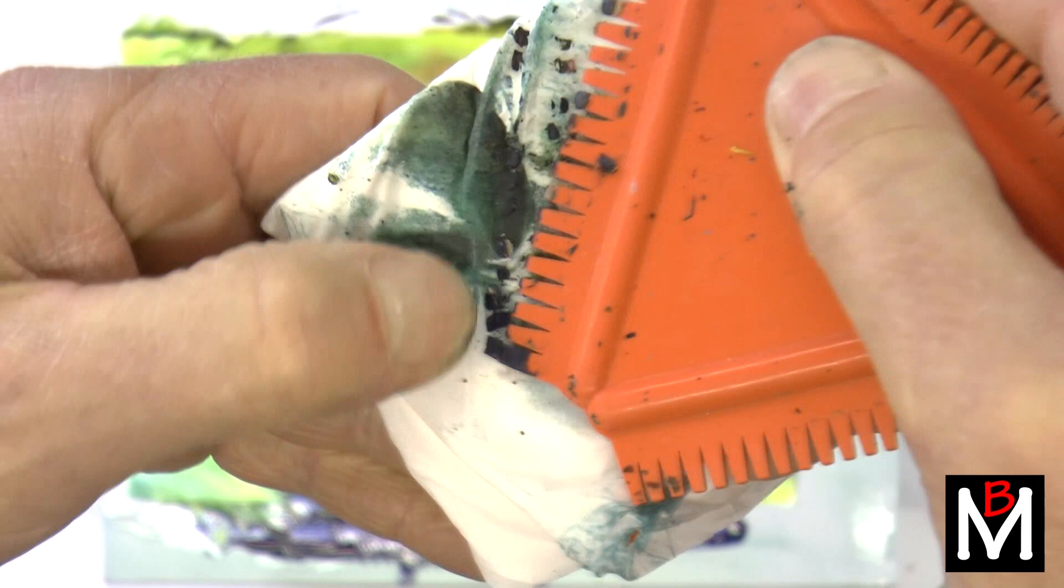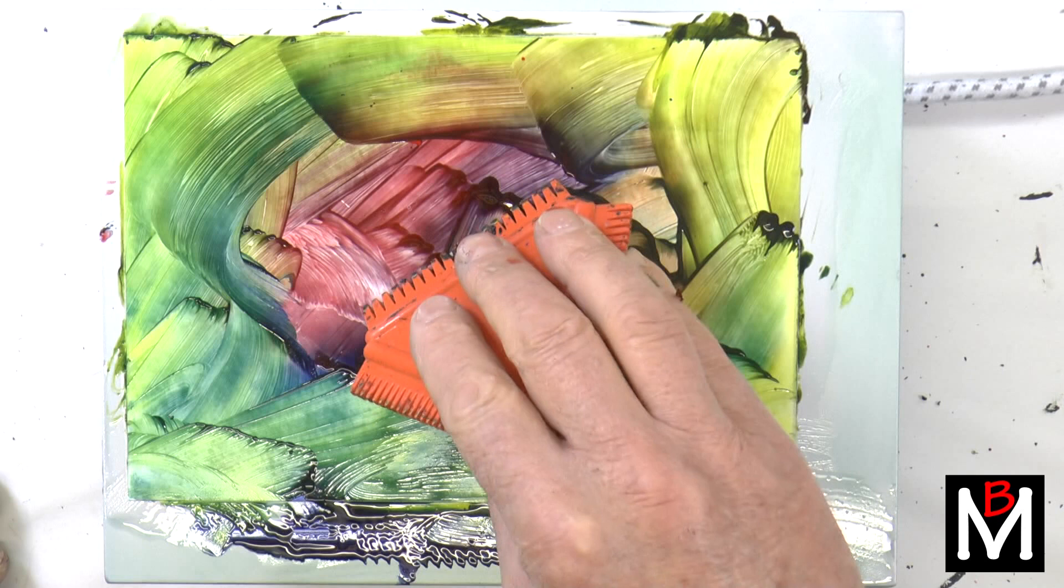Now we've got wax on. Clean the comb off. All that dark wax I had before has stuck to the teeth of the comb, so clean that off and I won't get those dark colors.